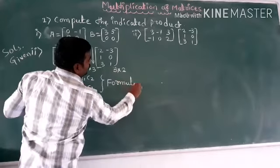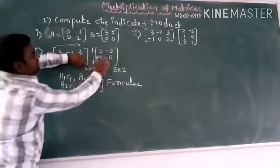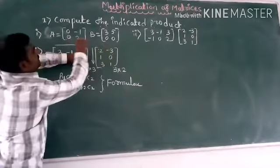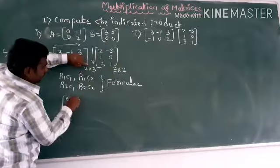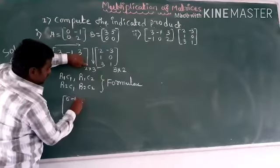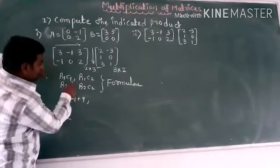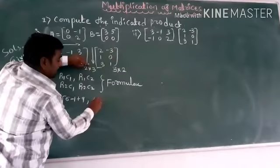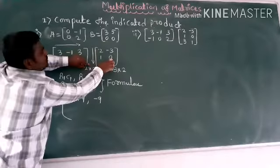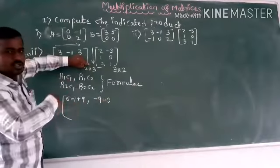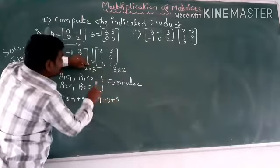Now multiply: close the first row with the first column. 3×2=6, (-1)×1=-1, 3×3=9. That finishes the first element. Next: 3×(-3)=-9, (-1)×0=0, 3×1=3. The second element is -9+0+3=-6. That finishes the second row calculation.